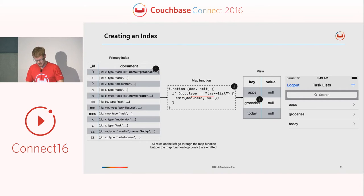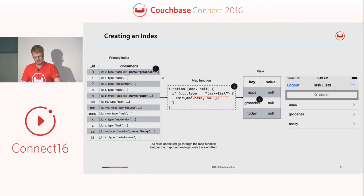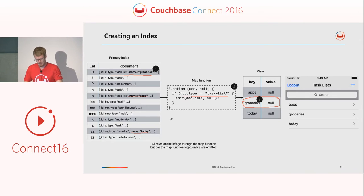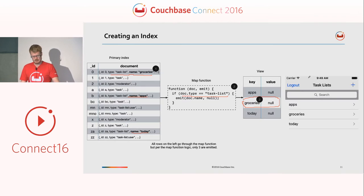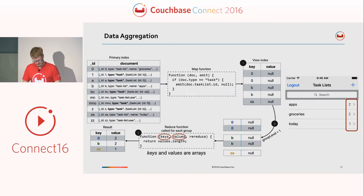The first document happens to be a task list with name 'Groceries', so it emits 'Groceries' into the index. Indexes are guaranteed to be ordered by key, so entries like 'Apps', 'Groceries', and 'Today' will appear in alphabetical order when retrieved. If you have a UI, you'd see a task list showing Apps, Groceries, and Today in sorted order.